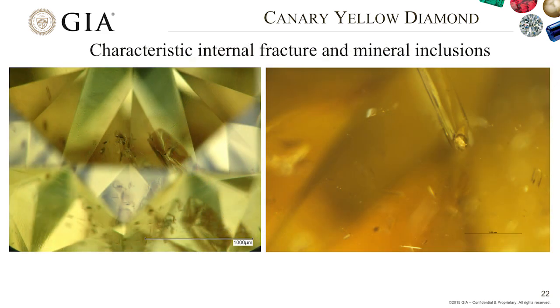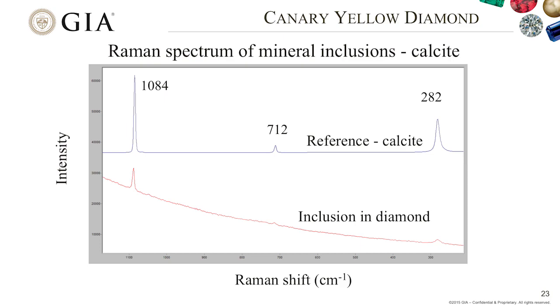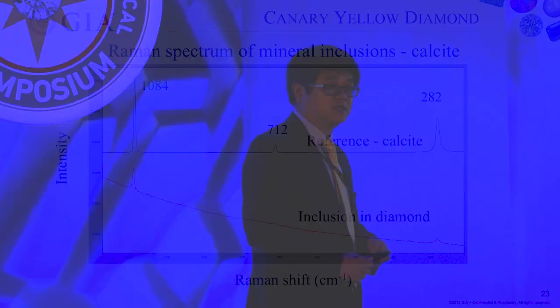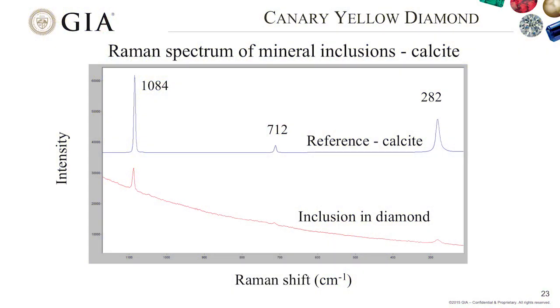Another distinction: type 1b diamonds are dominated by sulfide inclusions, but this group of canary diamonds commonly shows internal fractures that don't reach the surface, with mineral inclusions inside. When we take Raman spectra to identify these inclusions, they turn out to be calcite. Calcite is not a very common inclusion in natural diamond, but it is very common in this canary diamond group. The Raman peaks match well but are shifted slightly to higher wavenumbers, indicating these inclusions are still under high pressure.